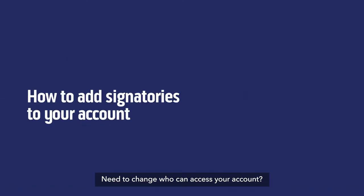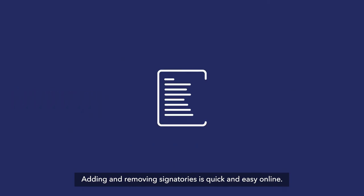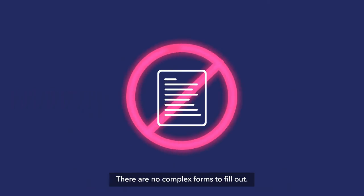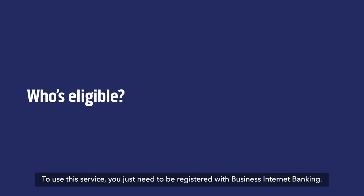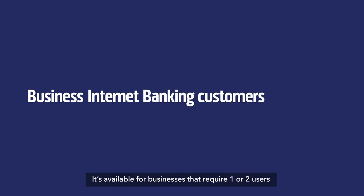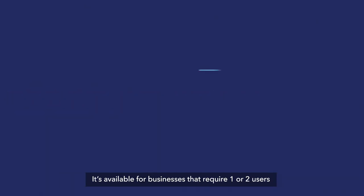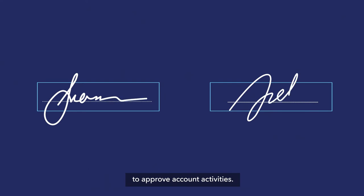Need to change who can access your account? Adding and removing signatories is quick and easy online. There are no complex forms to fill out and you won't need to post anything. It's simple to use this service — you just need to be registered with business internet banking. It's available for businesses that require one or two users to approve account activities.